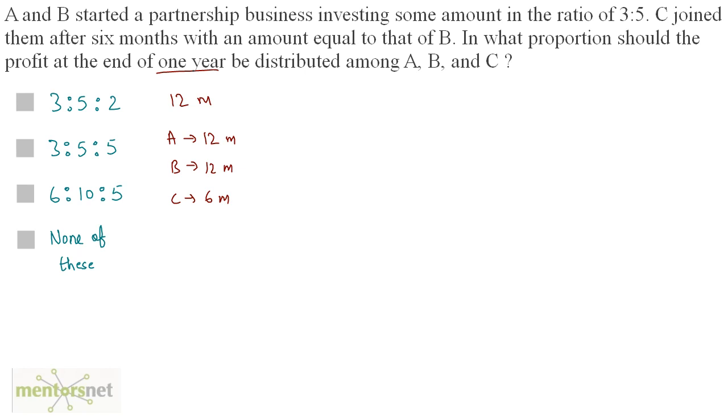We have been given that the ratio of the investments of A and B is 3 is to 5. I can definitely assume that A is equal to 3x and B is equal to 5x. C joined after 6 months with an amount equal to that of B, so C's investment will be equal to 5x. Now we have the investments and the time periods.